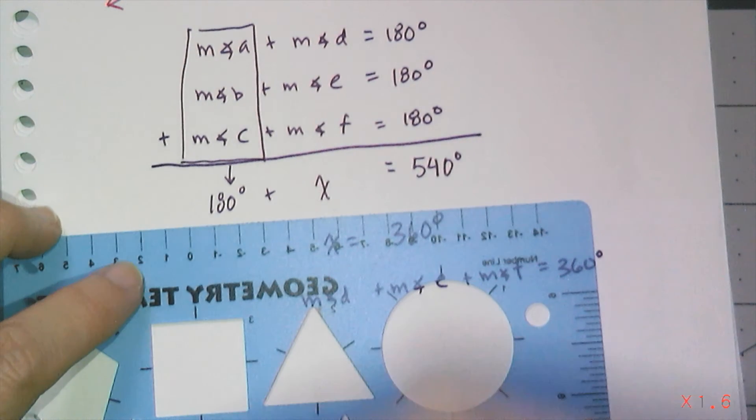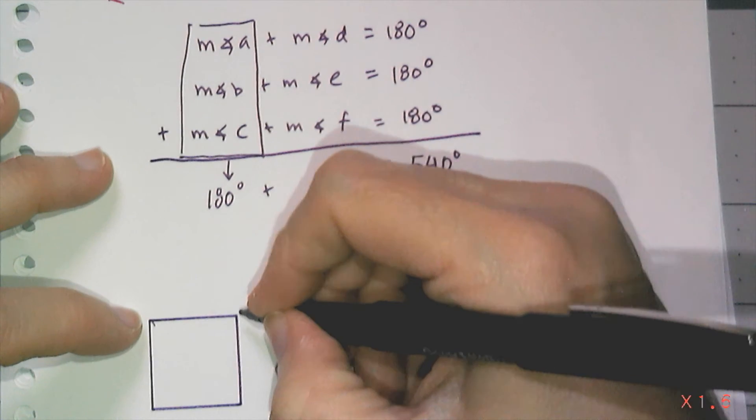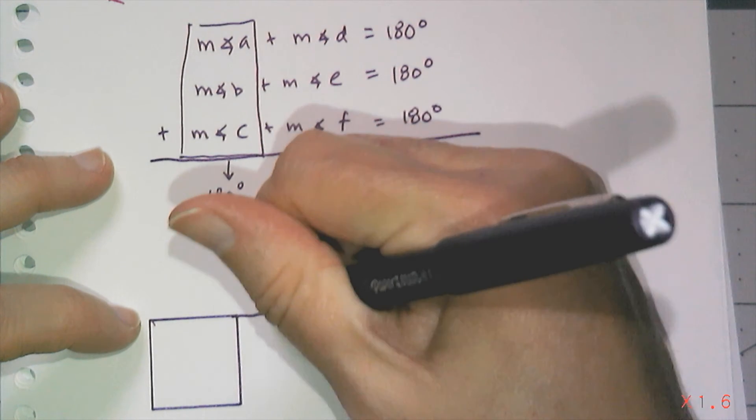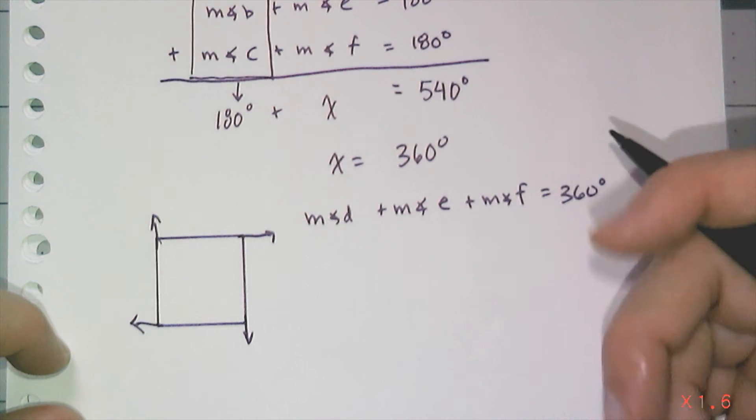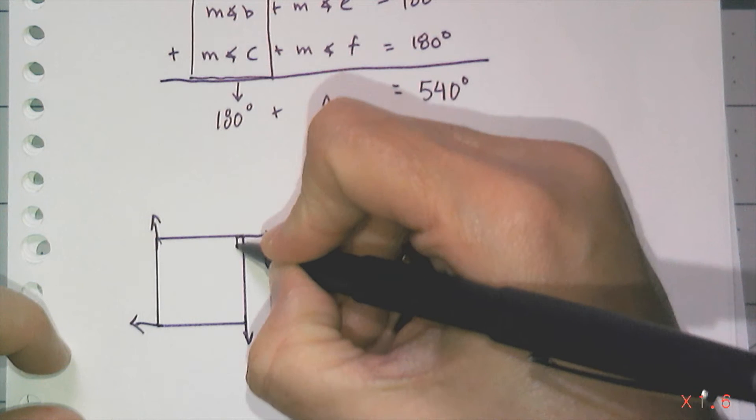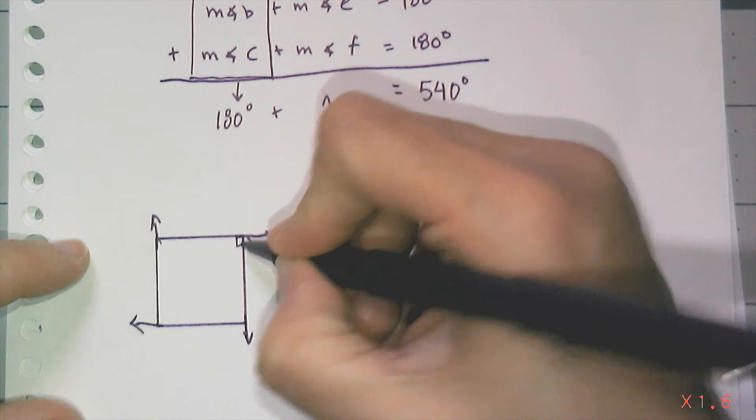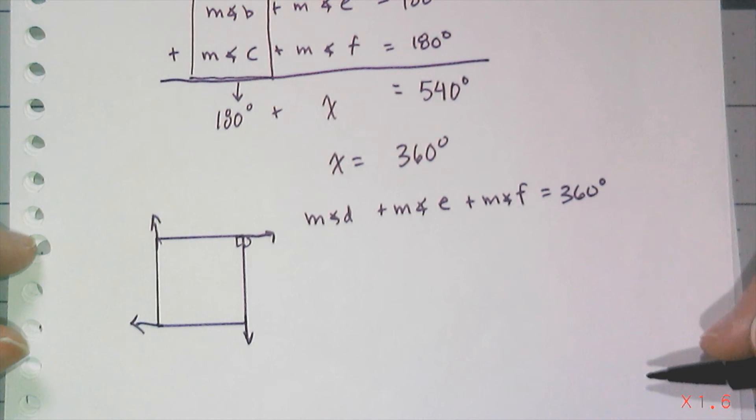We know that in a square, it has, if I were to draw out those one set of exterior angles, I'd have four exterior angles. And, you know, they would all be 90 degrees. And so that means the sum of the four exterior angles would also be 360 degrees.